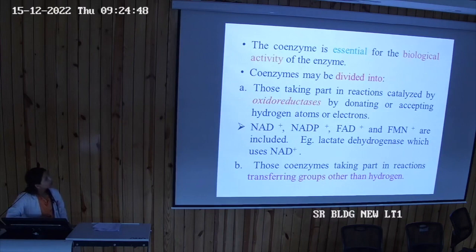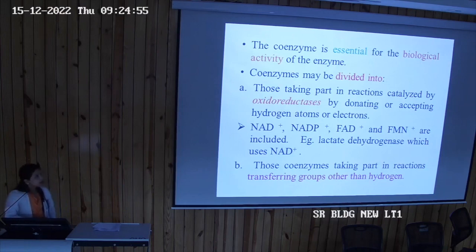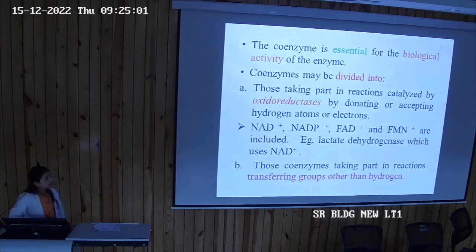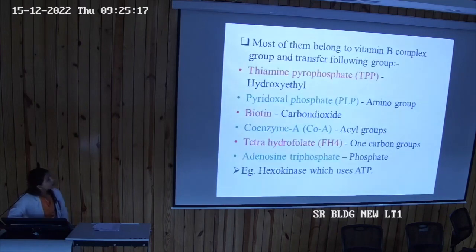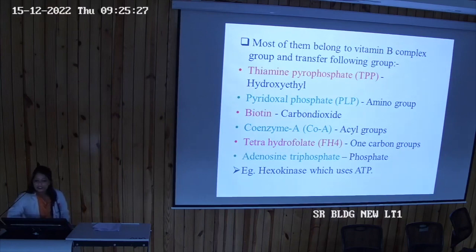Coenzymes are divided into two groups. Group A coenzymes participate in reactions catalyzed by oxidoreductases, donating or accepting hydrogen atoms or electrons. Group B coenzymes transfer groups other than hydrogen. Most Group B coenzymes belong to the vitamin B complex: thiamine pyrophosphate (TPP), pyridoxal phosphate (PLP), biotin, coenzyme A, tetrahydrofolate, and adenosine triphosphate (ATP).